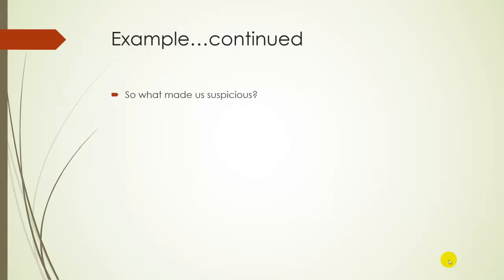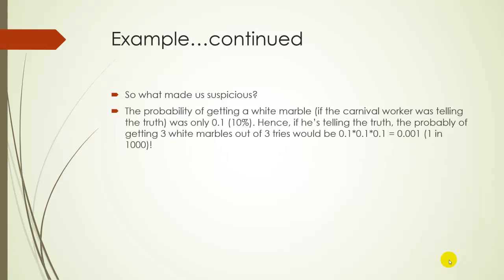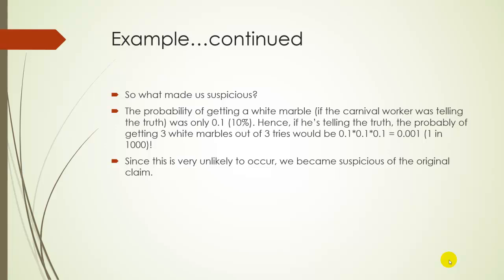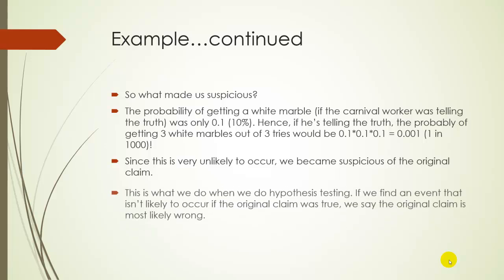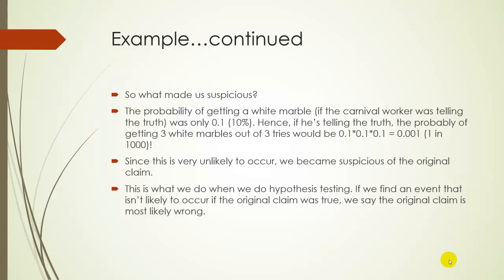So what made us suspicious? What made us think that the carnival worker was cheating? Well, there's only supposed to be a 10% chance of losing the game if the person was telling the truth. Doing this three times, that's 10% × 10% × 10% = 0.001, or a one in 1,000 chance of losing three times in a row. So if this person was telling the truth, it would be very unlikely for me to lose three times in a row — that's what made me suspicious of the original claim. And that's what we're doing in hypothesis testing: if an event isn't very likely to occur given the original claim, we say the original claim is most likely wrong.